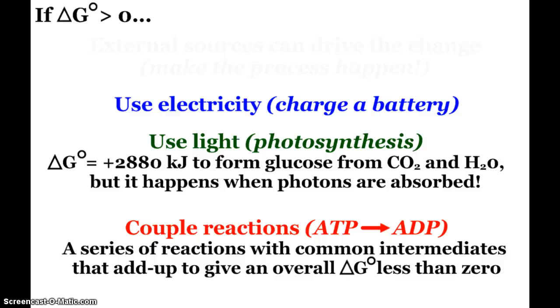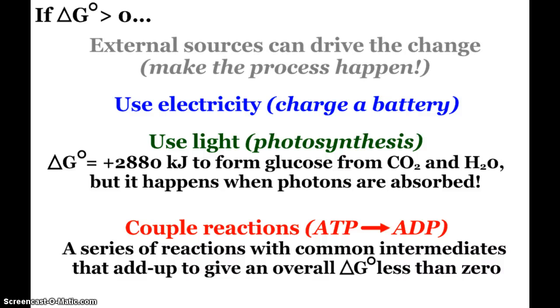Now if we have a reaction where ΔG is positive, that doesn't mean it can't absolutely never happen. Because we can have external sources that can drive the change and make this reaction happen, or a process. So for example, we can use electricity. A rechargeable battery does not want to just spontaneously recharge itself. So we use electricity. And we'll talk about electrochemical processes in our last unit of the year.